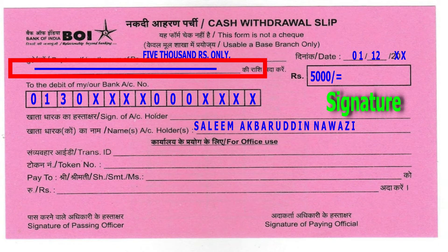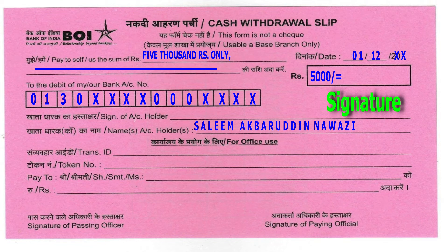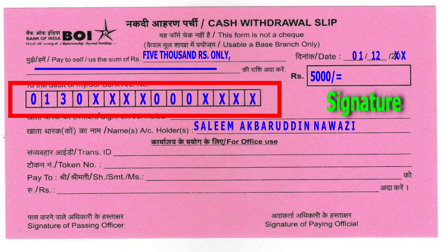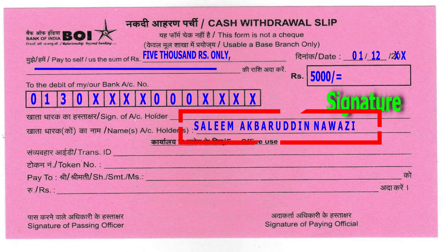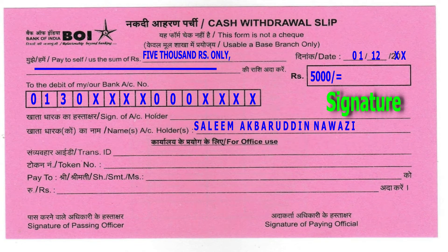Now we will fill the column. It is written as 'Name of Account Holder.' The column for the account holder's name is filled in, and then the signature of the account holder goes in the designated column.